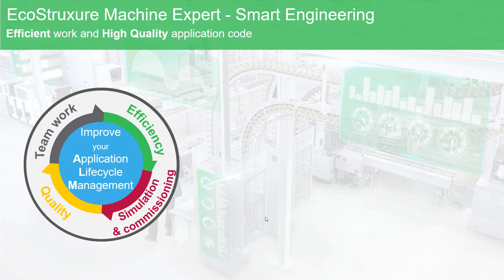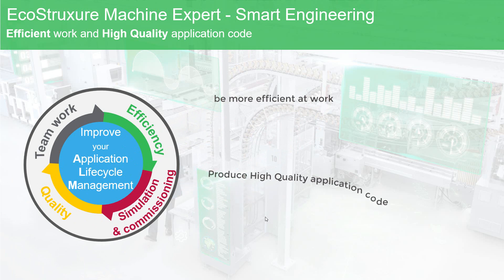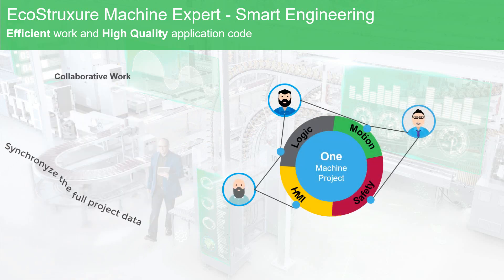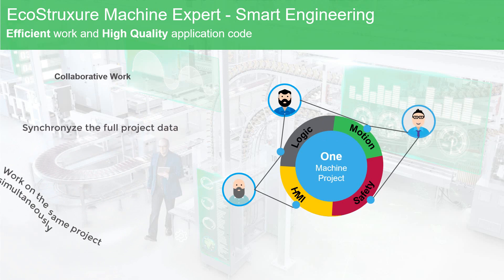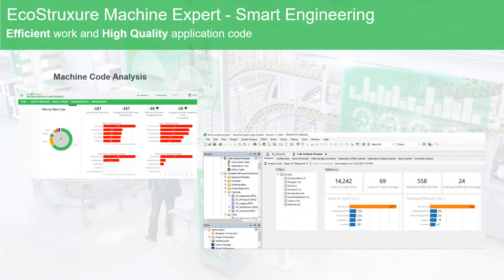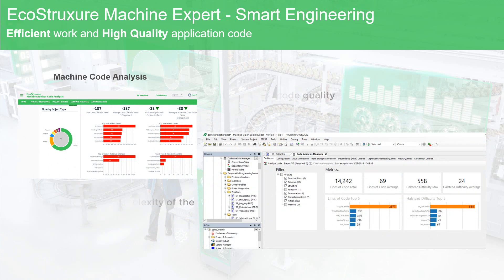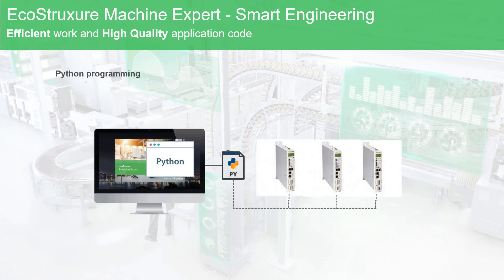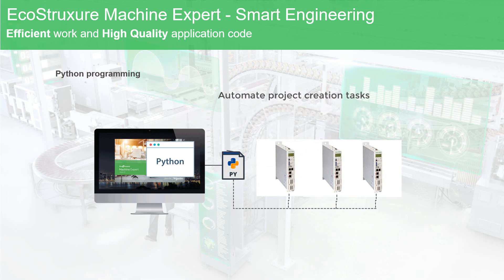EcoStruxure Machine Expert helps programmers to be more efficient at work and produce high-quality application code with unique features on the market. Collaborative work allows you to synchronize the full project data and allow separate colleagues to work on the same project simultaneously. Machine code analysis helps to improve code quality and understand the complexity of the code, thanks to graphical code exploration and web interface. A Python programming interface can be used to automate project creation tasks and become more efficient through automated development and project generation.